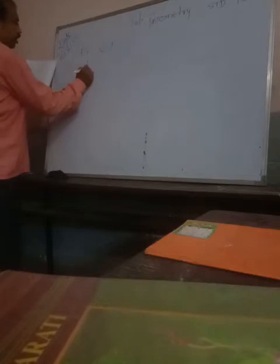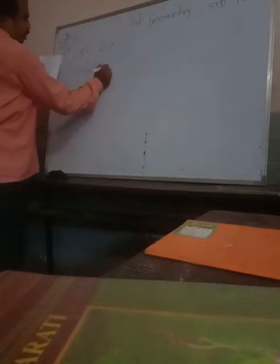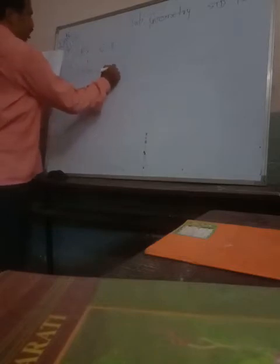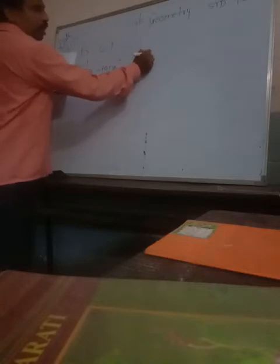What is the sixth question? See here: 1 upon sec theta minus tan theta is equal to sec theta plus tan theta. That is the question: 1 upon (sec θ - tan θ) = sec θ + tan θ.